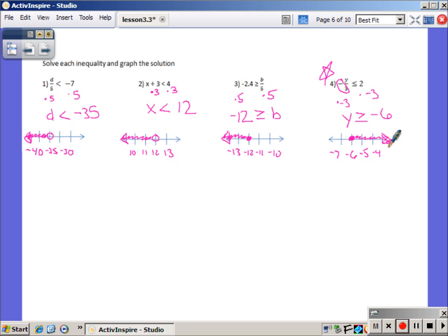So again, number four is the only one that we multiplied by a negative. It doesn't matter what the result is. The number in your final answer could be a positive number. If you multiplied by a negative, you must flip that inequality symbol.